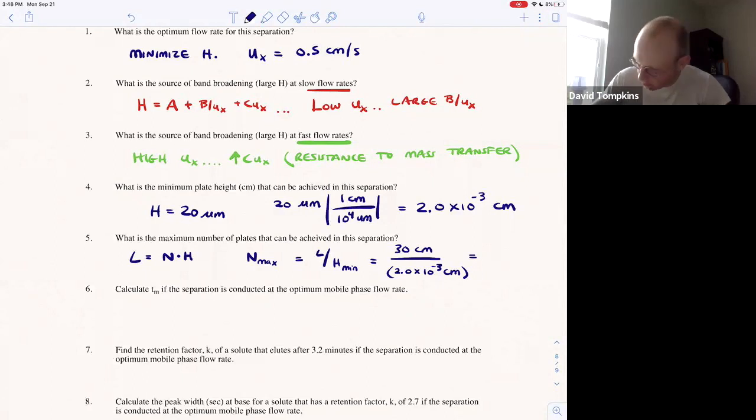So here we have 15,000 plates and that's a unitless value. That's the maximum efficiency we can achieve with this separation.